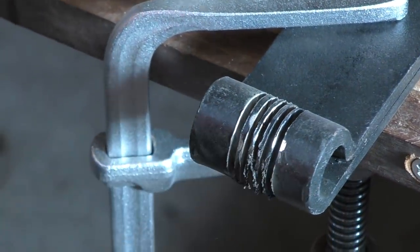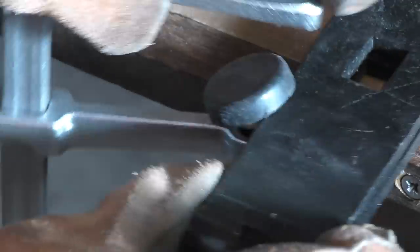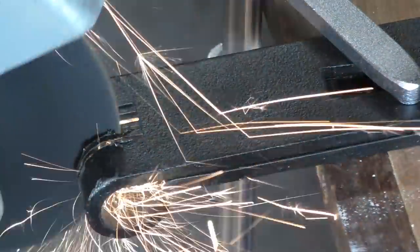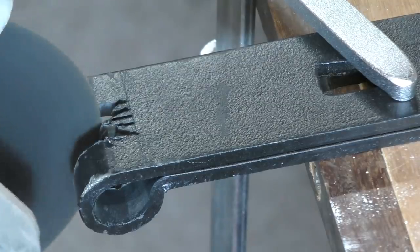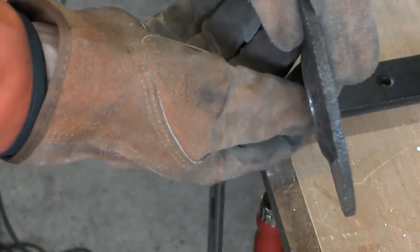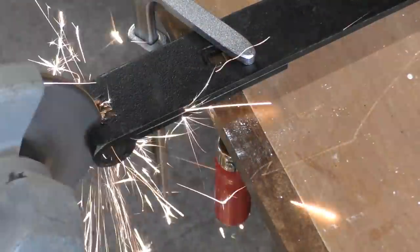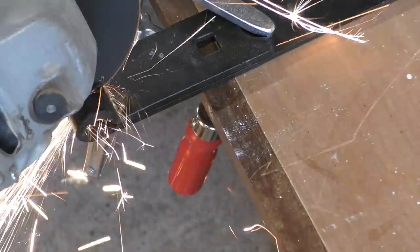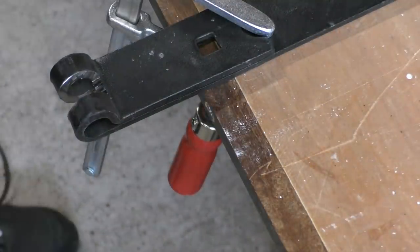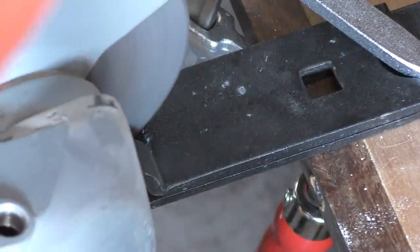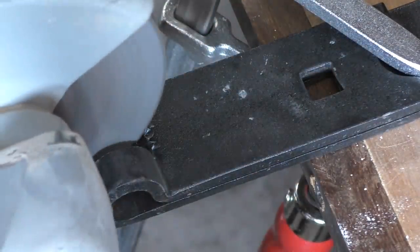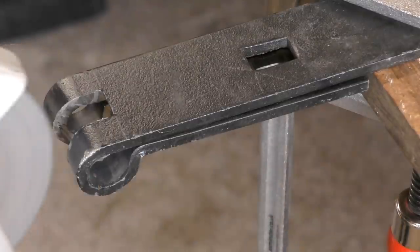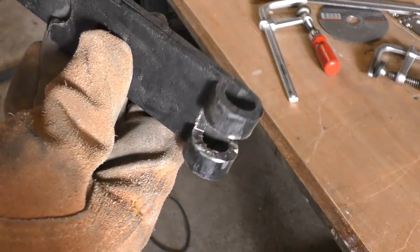This just shows you how brilliant these thin blades are because you'd never be able to get that sort of cut with a standard metal blade. Now I'm going to use my thicker grinder disc to finish off the job. That's looking pretty good I would say. Now I've just got to do the mating section.